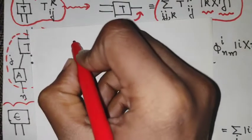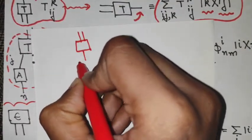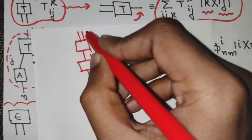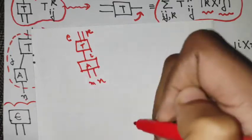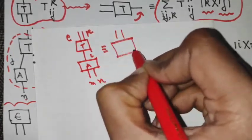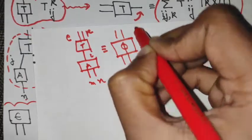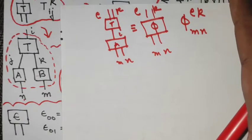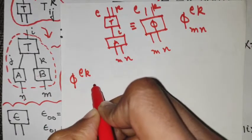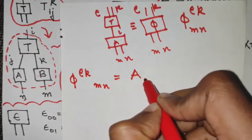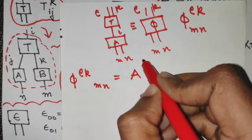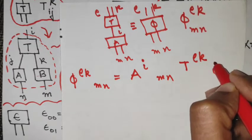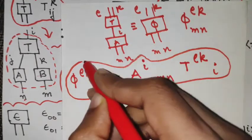Suppose you have one box with two outputs connected to another box that also has two outputs. We can write the composite indices as i and also as k and l. If this tensor is T and this is A, then the entire thing is equivalent to a big box φ with indices m, n, k, and l, where φ^{mn}_{lk} equals A^{mn}_i times T^i using Einstein summation. This tensor multiplication will come in handy in various cases.